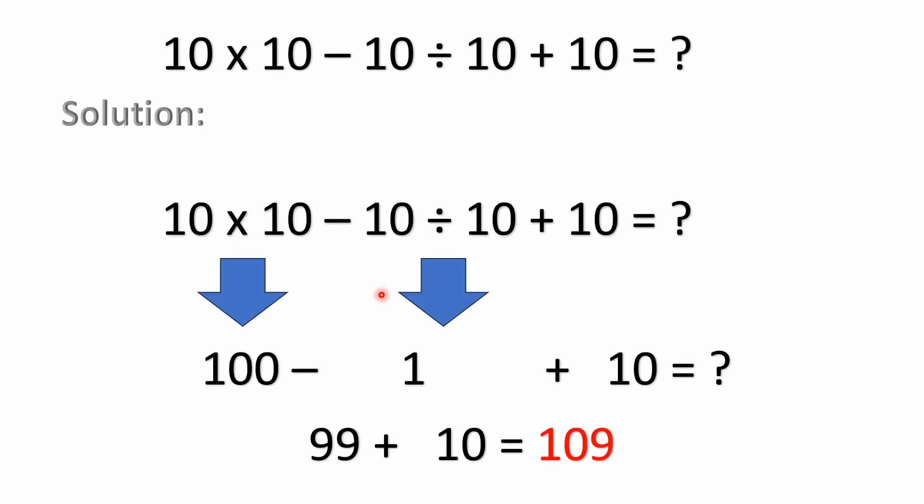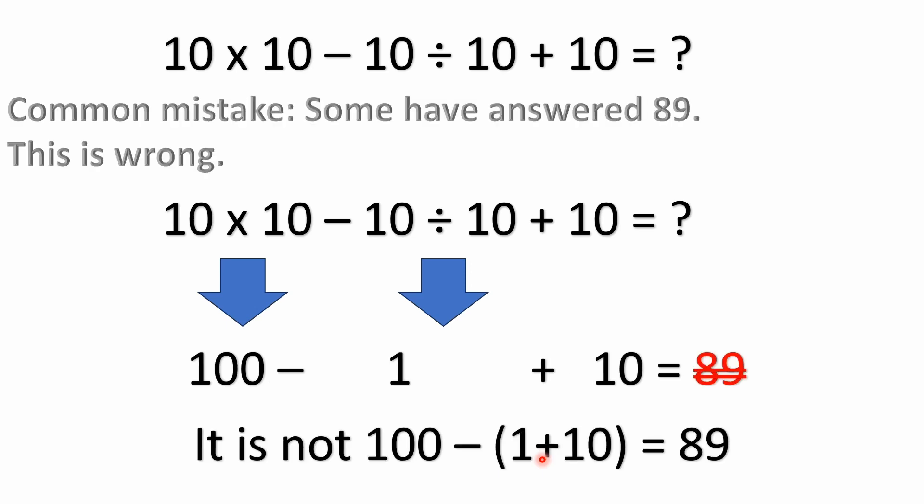So here you have 10 times 10. First of all, we have multiplication first, going left to right. You just solve the multiplication, the division going left to right. So we have 10 times 10, which is 100. Then minus 10 divided by 10. Well, 10 divided by 10 is just 1. But remember, it's 100 minus 1. And then we just have this plus 10 sitting out here. So it's 100 minus 1 plus 10. And what does that equal? Well, 100 minus 1 is 99. So we have 99 plus 10 equals 109. So the only correct answer is 109.